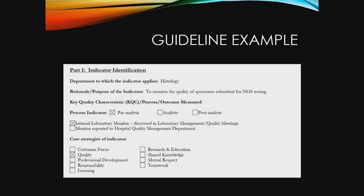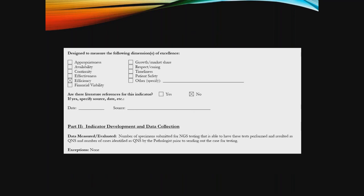This is an example of a quality guideline and its key elements. The first slide shows the basic information of the indicator: what department it applies to, what the purpose of the indicator is — basically what you are monitoring — and whether the monitor focuses on pre-analytic, analytic, or post-analytic process. This is also where it is documented where the outcome of the monitor is reported — internal or external to lab — and then the core strategy of the indicator. Part one of the form continues and allows you to indicate what you are measuring in a general sense and then list any references you might have used to create that monitor.